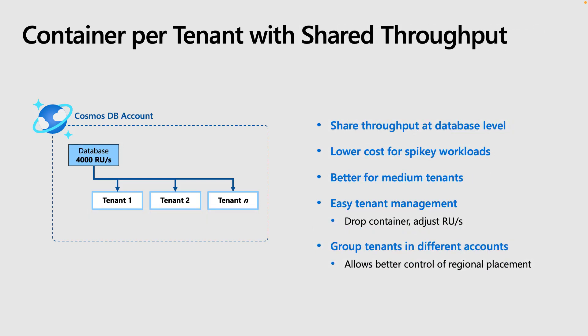The next model is provisioning sharded database throughput across multiple dedicated containers. This is a lower cost option for spiky workloads and medium tenant sizes. Tenants are still easy to manage and isolation is still excellent since each tenant is in their own container. You will retain the ability to group tenants in different regions. Note that there is no performance governance here, so these containers will be vulnerable to noisy neighbor issues due to shared throughput. The maximum number of containers using shared throughput is currently capped at 25, but you can mix shared throughput with dedicated throughput containers.